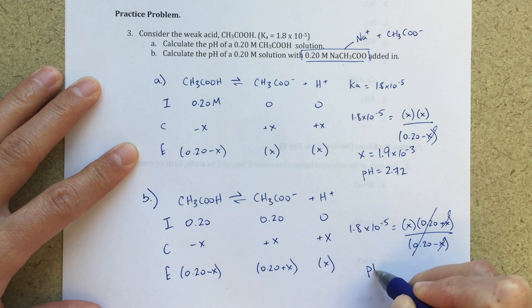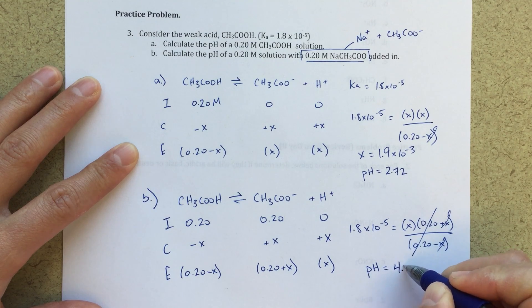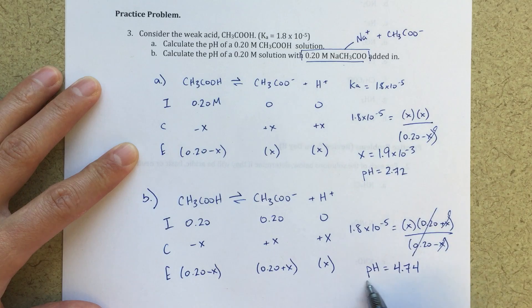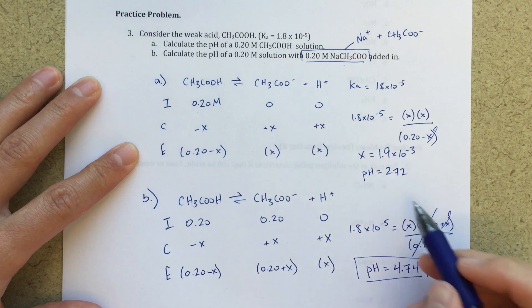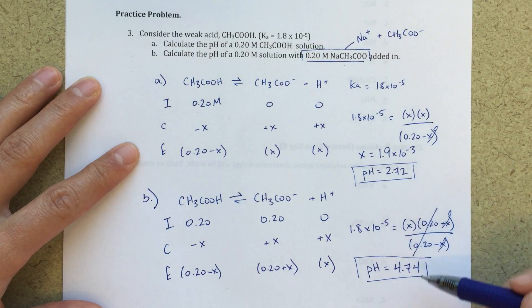So if I wanted to find the pH, that's just going to be the minus log of this. The pH is going to equal, in this case, 4.74. So now what I want to do is sort of go back and think about what is this telling me? What is this telling me?